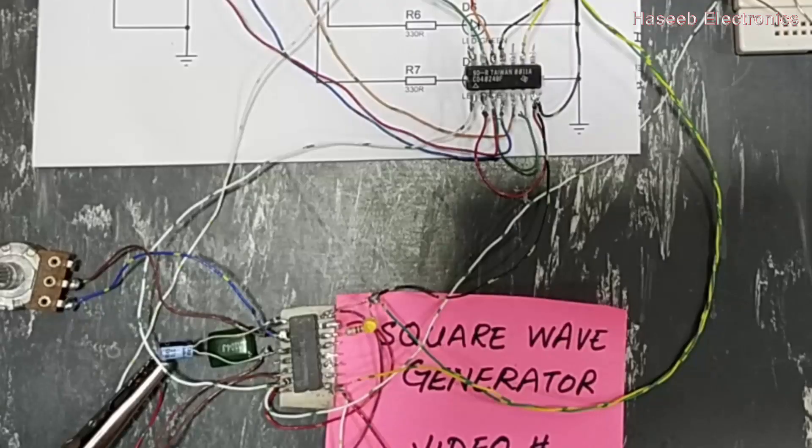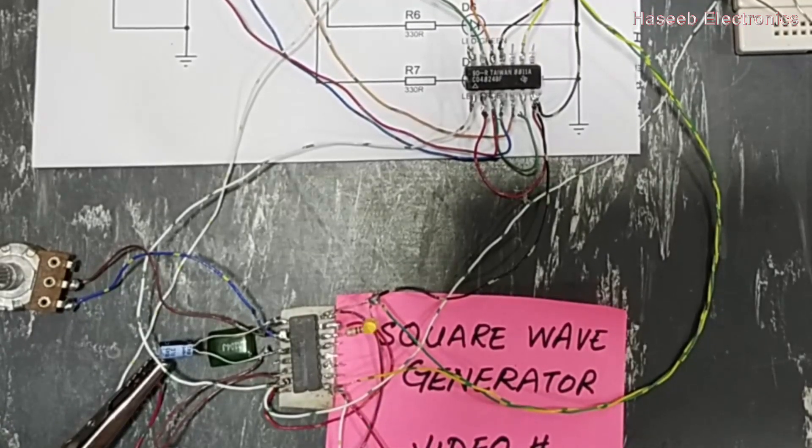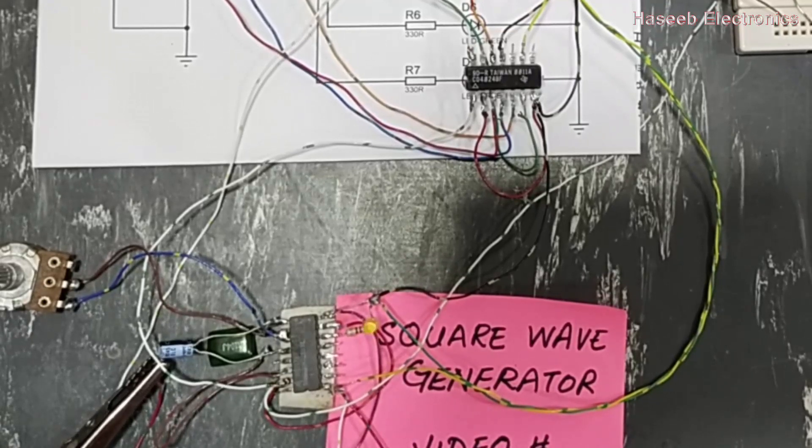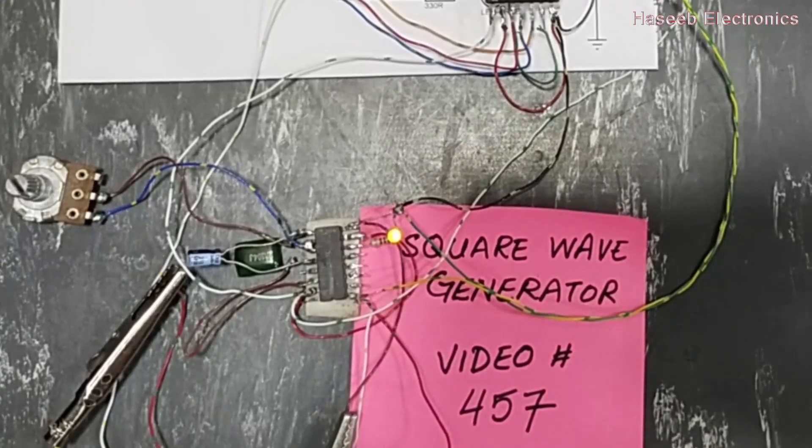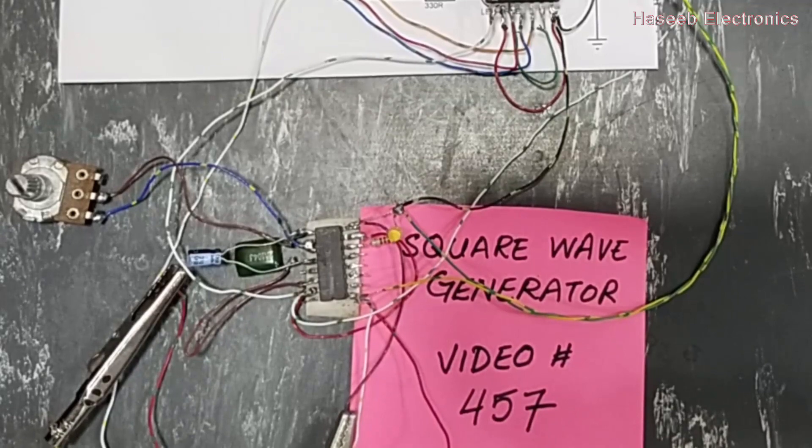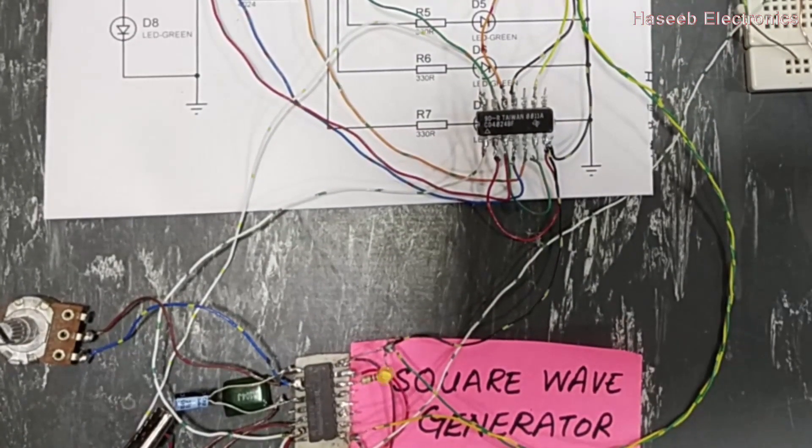If you want to make a square wave generator using CD4049 IC, you can follow video number 457 on my channel. I hope this video is informative. If it is informative, hit the like button. If you have any questions, kindly let me know in the comment box. Thanks for watching.